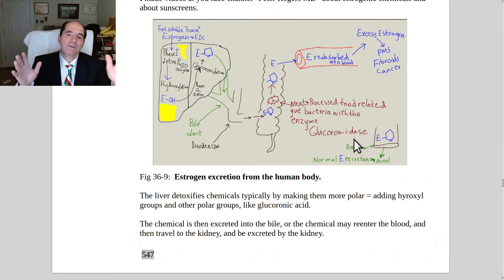And glucuronidase cuts the conjugated glucuronic acid from the estrogen. And once the E for estrogen is freed up, it gets reabsorbed into the blood. Normally, what should happen is you should defecate that excess estrogen out of your body.